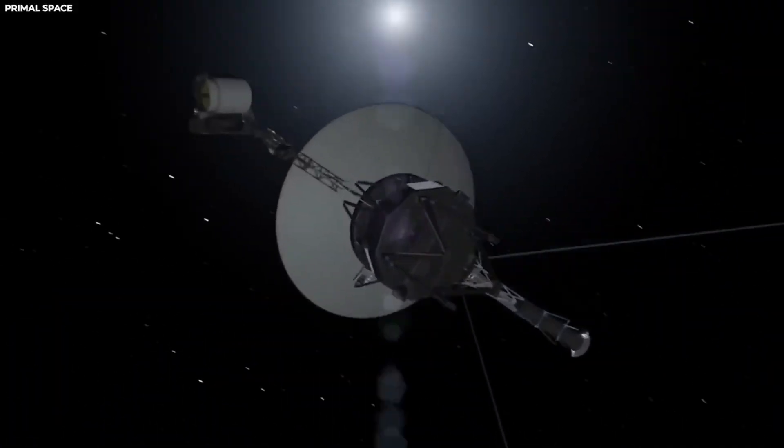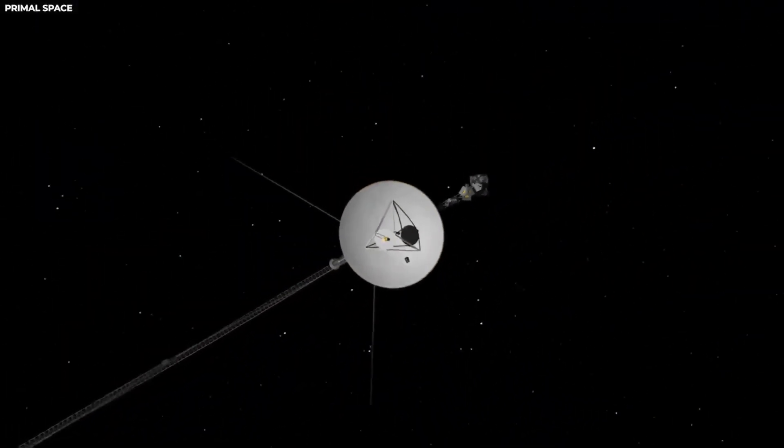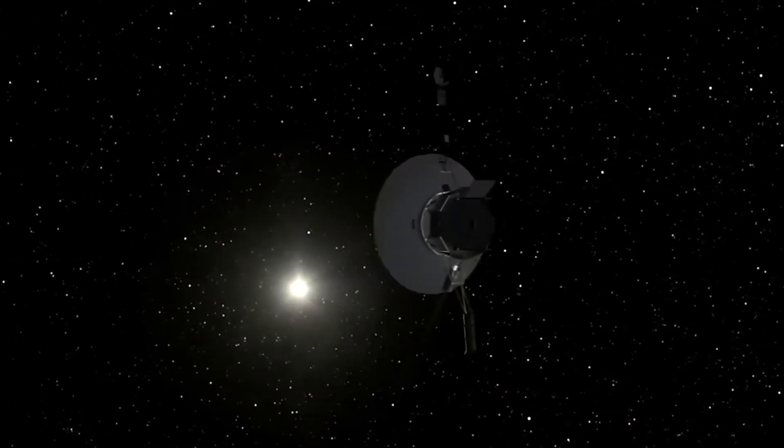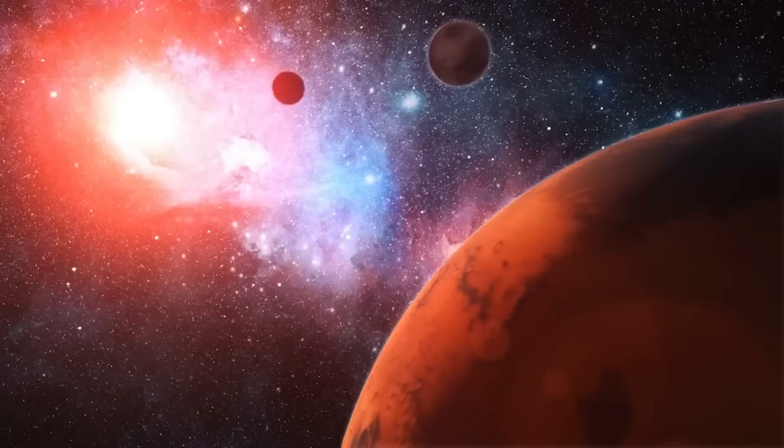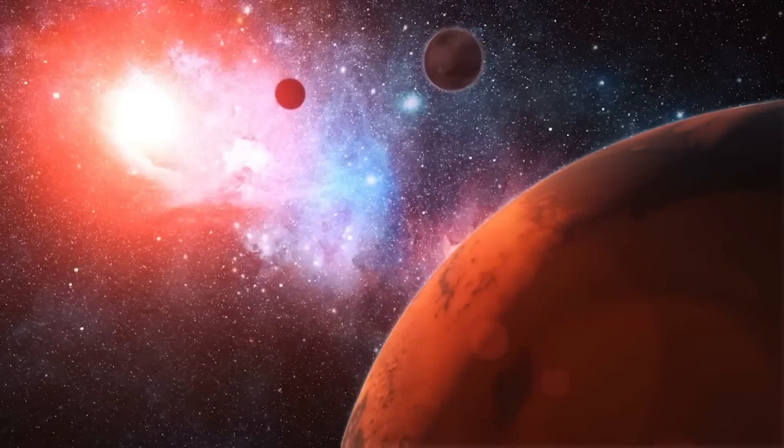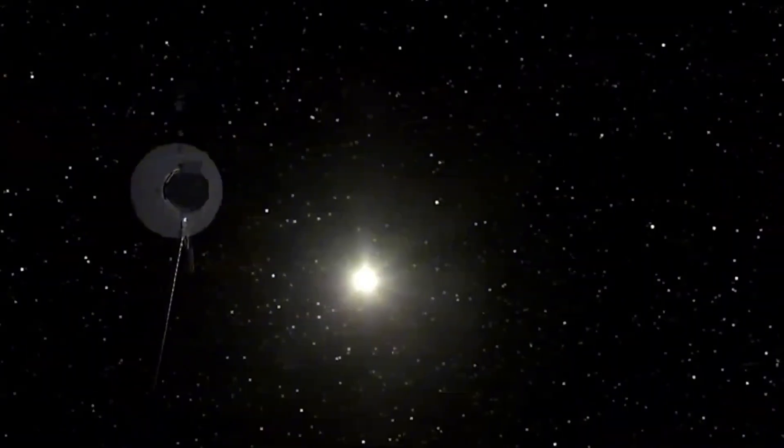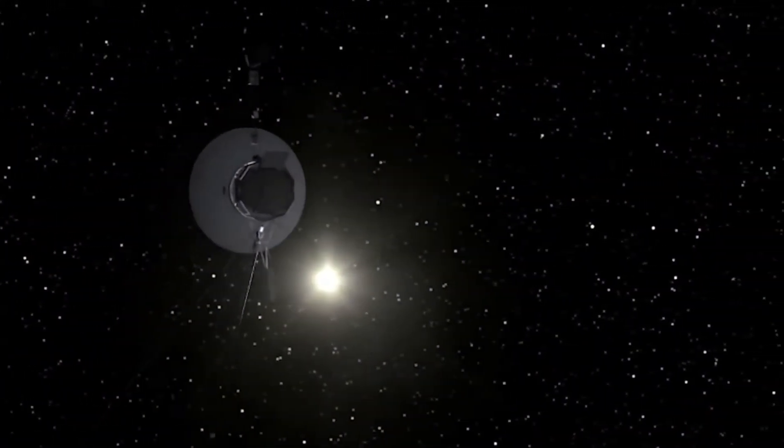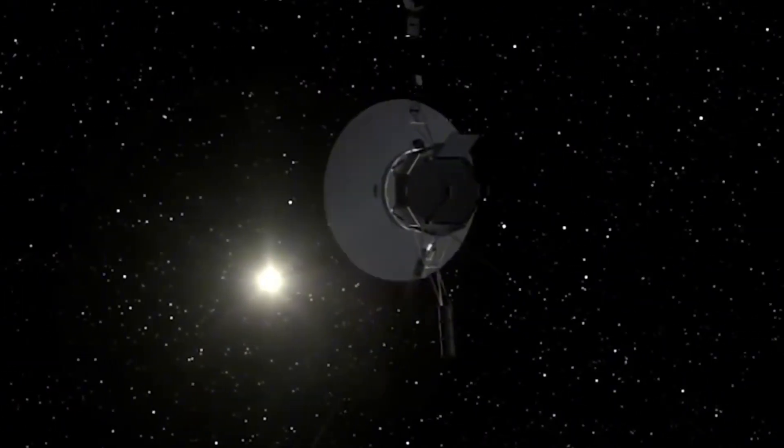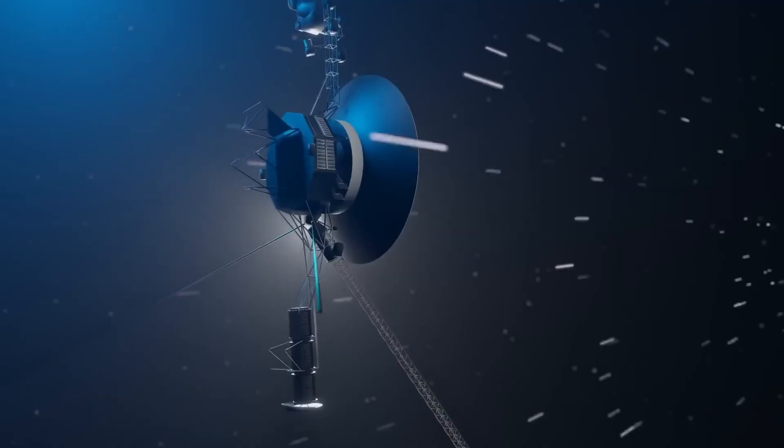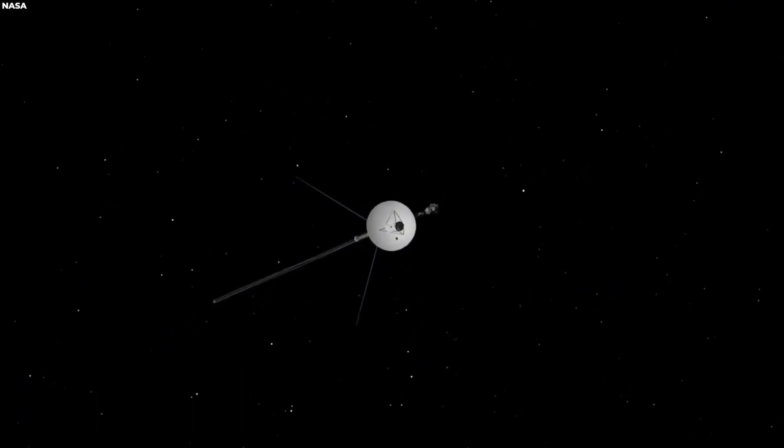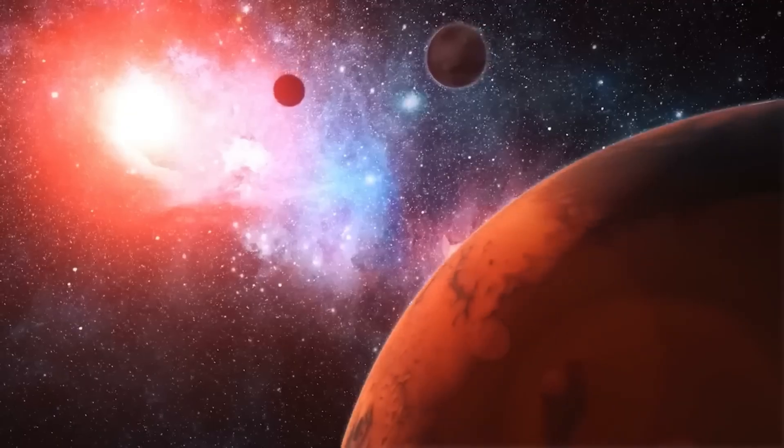Voyager 1 made many important discoveries that changed our understanding of the giant planet Jupiter. For example, Voyager 1 discovered that Jupiter has a ring system. Previously, scientists thought only Saturn had rings. Jupiter's rings are faint and mostly made up of tiny particles of dust, making them difficult to see from Earth, but Voyager 1's close-up images showed them clearly.